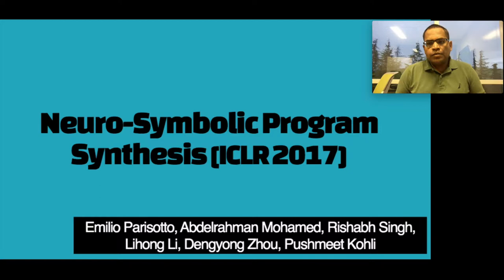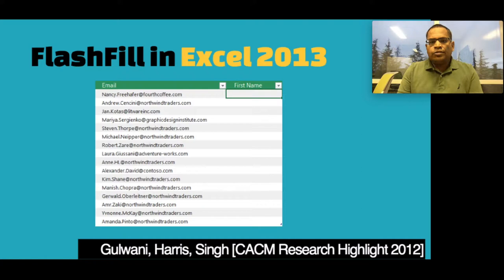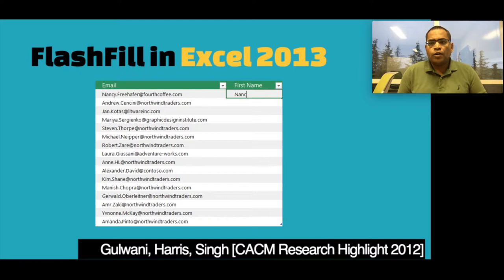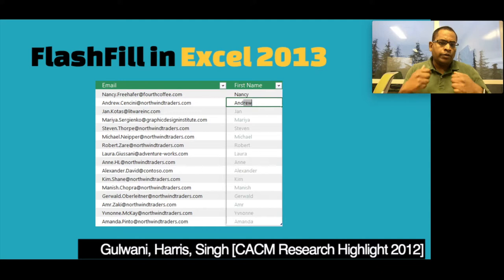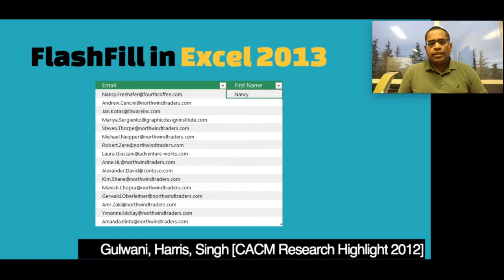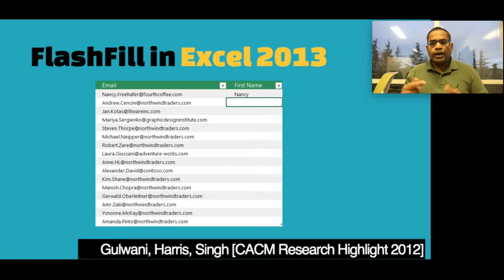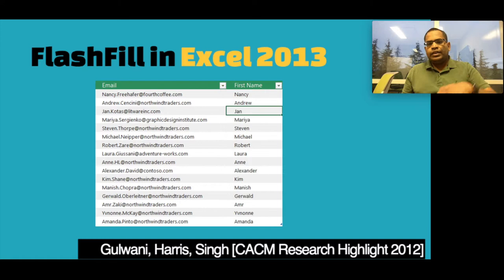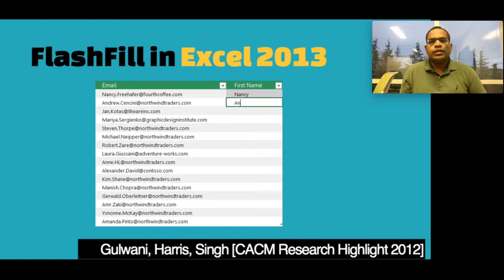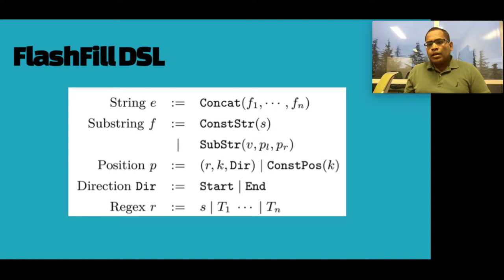The first work we did was on neural symbolic program synthesis, for which we chose the Flash Fill system — something built for Excel users who wanted to perform sophisticated regular expression-based data cleaning but weren't programmers. Users typically provide one or two examples in a spreadsheet, the system learns the corresponding program from those examples, and then runs the program on the remaining entries so users don't have to manually enter thousands of rows. The technique uses a domain-specific language that is a subset of Excel operations, mostly targeted towards regular expression-based data transformations.